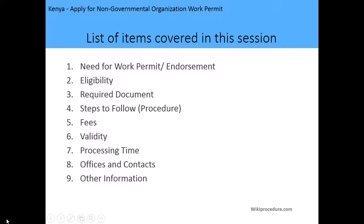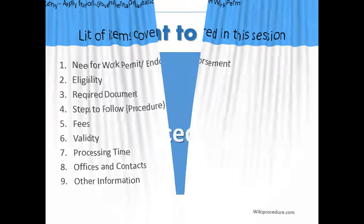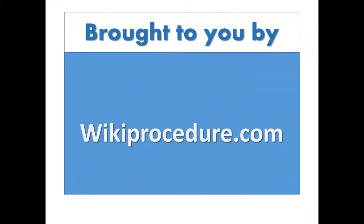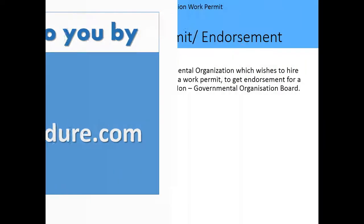The list of items we are going to cover in this session includes: the need for the work permit and the need for the work permit endorsement, the eligibility criteria, the required documents, steps to follow when making the application, the fees, validity period, processing time, office location and contact information, and any other relevant information on how to apply for a non-governmental organization work permit. Welcome to our presentation today, brought to you by wikiprocedure.com.